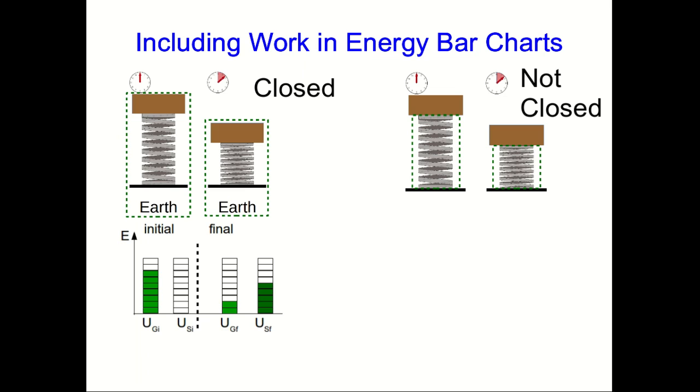The energy bar chart for the first choice shows that the system is converting gravitational potential energy into spring potential energy. Whereas in the non-closed case, the system is gaining energy because work is being done on it by an outside force, and all of that gained energy ends up as spring potential energy. So far, so good.